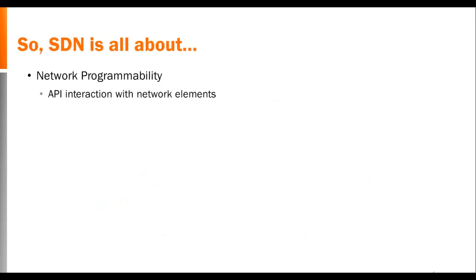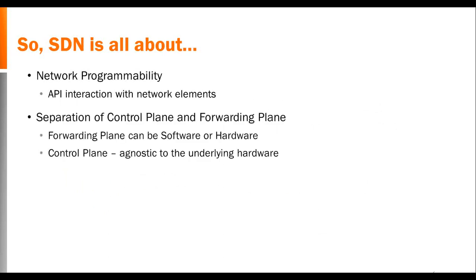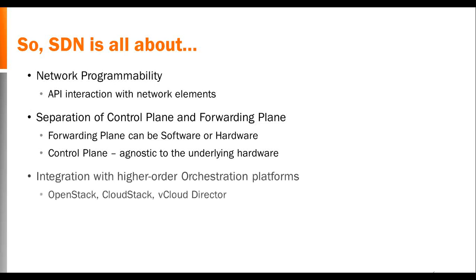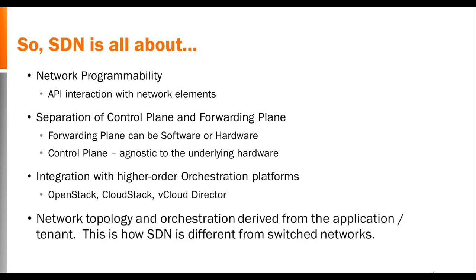Software-defined networking is all about network programmability — having a standard open set of APIs that allow you to interact between network elements. It's about a separation of the control plane and the forwarding plane. The forwarding plane can be hardware-based traditional routers or switches, or it can be software-based routing and switching. The control plane needs to be agnostic to the underlying networking device. SDN is also about integration of higher-order orchestration platforms like OpenStack, CloudStack, vCloud Director. It's about vendor independence, and most importantly, a network topology and orchestration derived from the application or the tenant.